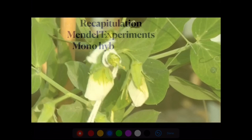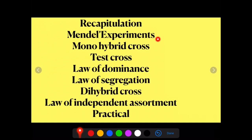We have studied Mendel's experiments on colour of flower, height of plant, and colour of seed in the monohybrid cross. We studied the test cross, derived the Law of Dominance and Law of Segregation, studied the details of the dihybrid cross, studied the Law of Independent Assortment, and performed the practicals. We end this class here. Thank you very much — stay safe, stay healthy, and study well at home.